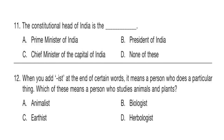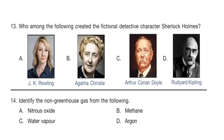Question 11. The constitutional head of India is the dash. The answer is option B: President of India. Question 12. When you add 'ist' at the end of certain words, it means a person who does a particular thing. Which of these means a person who studies animals and plants? The correct answer is option B: Biologist. Question 13. Who among the following created the fictional detective character Sherlock Holmes? The answer is option C: Arthur Conan Doyle.